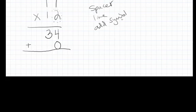Now, I told you there's four things we need to do. Spacer, plus sign, line, and cross out old carries. So that's spacer, line, add symbol, and cross out old carries.